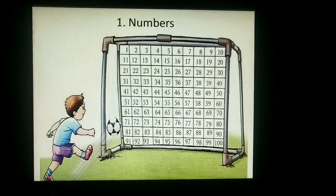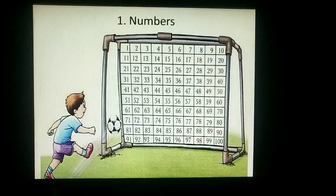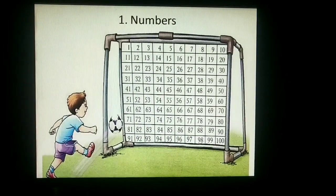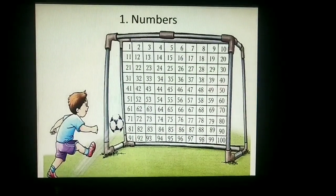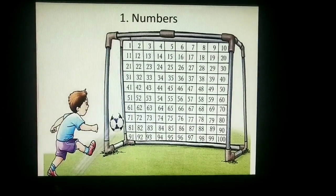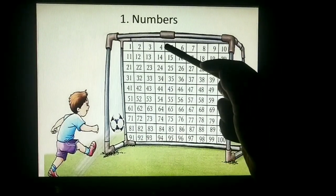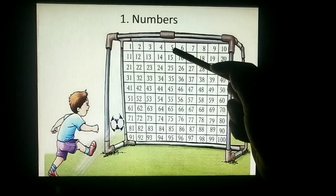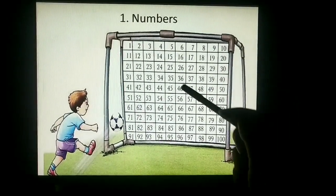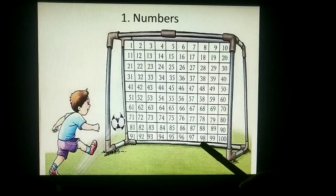So firstly, we discuss numbers. What are numbers? Just say, how many numbers — 5, 6, 7 — so all numbers, counting: 1, 2, 3, 4, 5, 6, 7, 8, 9, 10, up to 100, up to 1000. So all numbers.